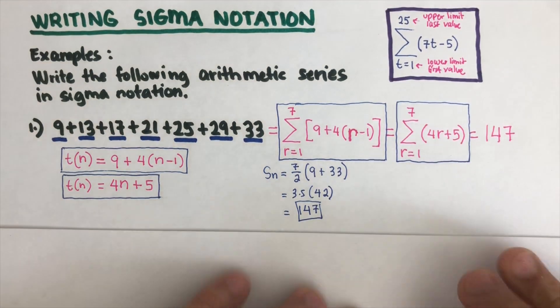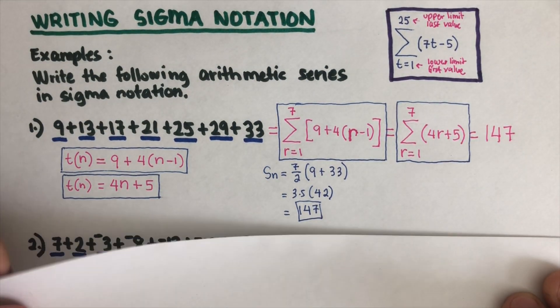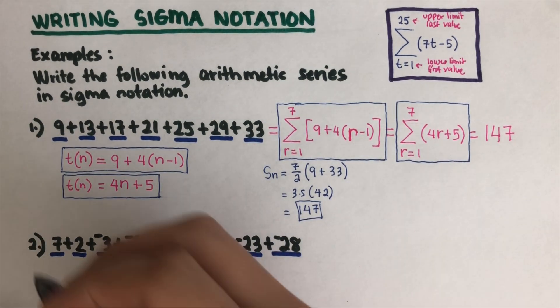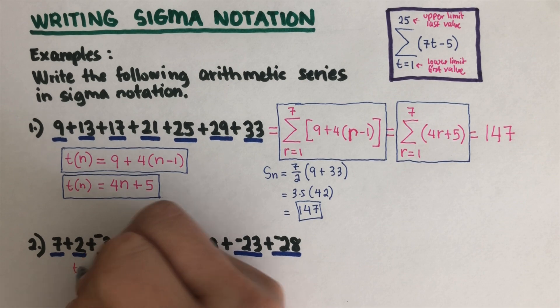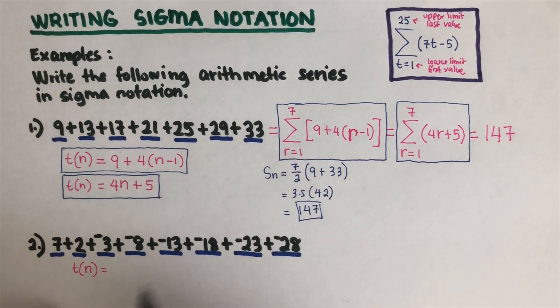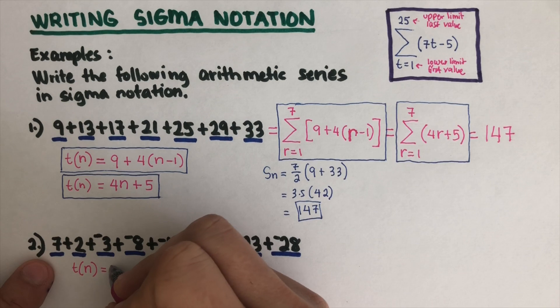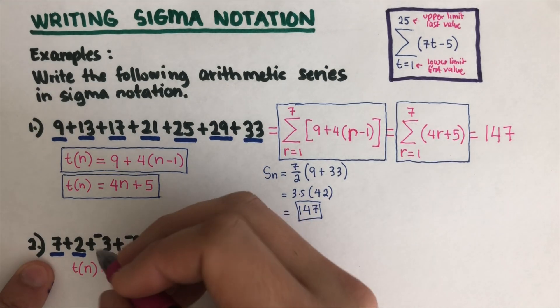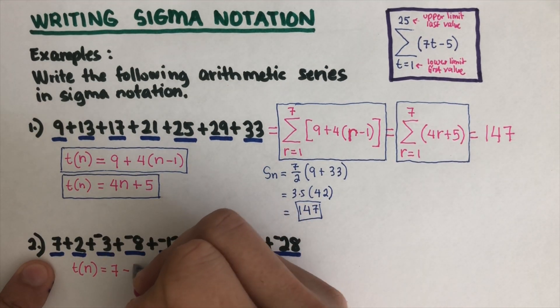Let's have the second example here. We are going to find the t(n). The t(n) is equal to the first term which is 7. How much does it grow by? This one is growing by negative 5, so 7 minus 5 times n minus 1. That's the first equation.